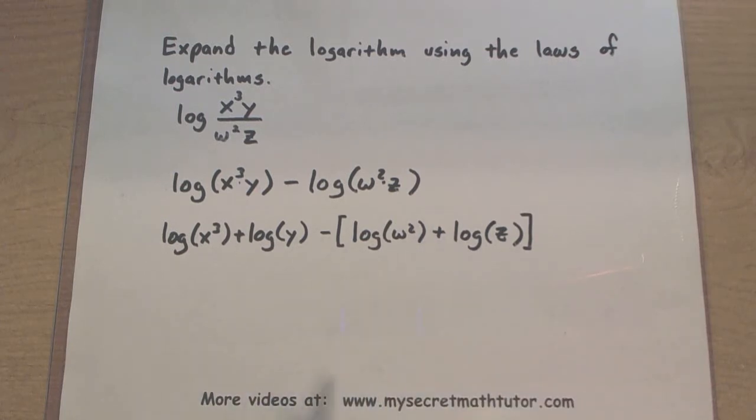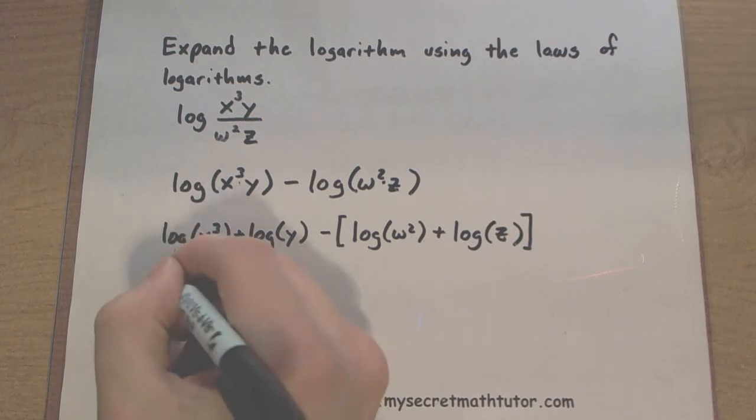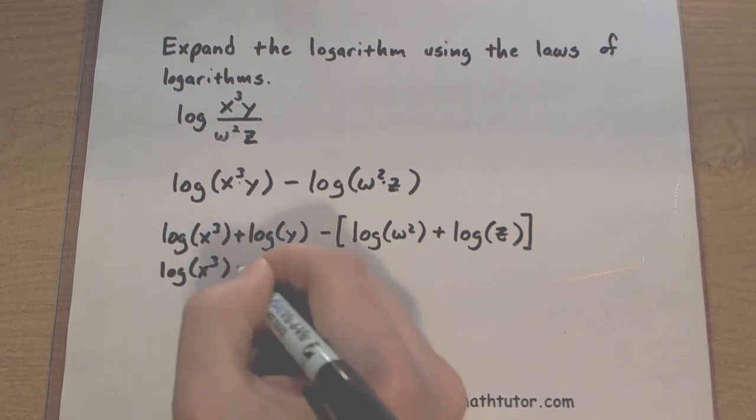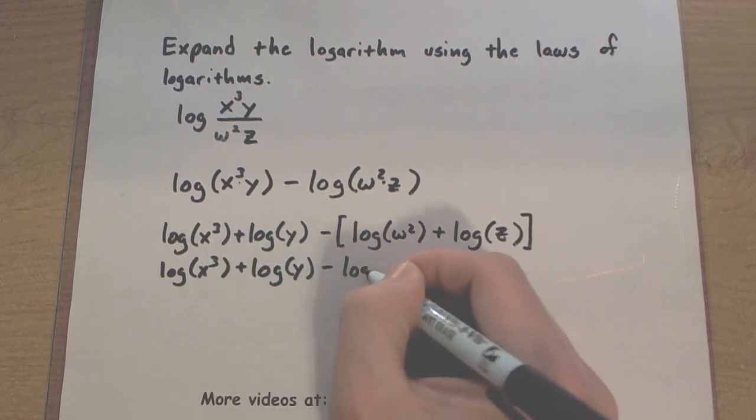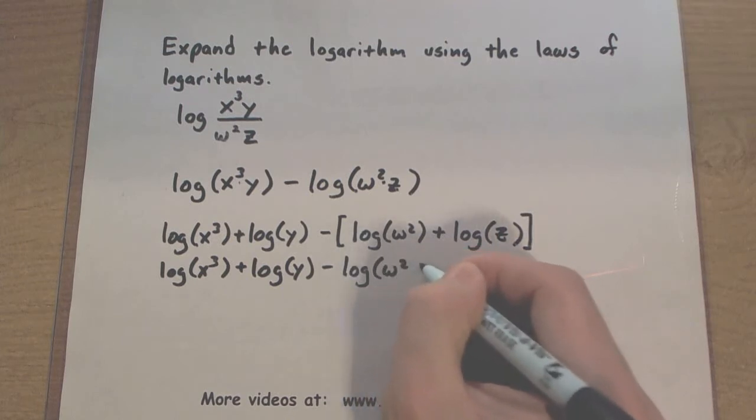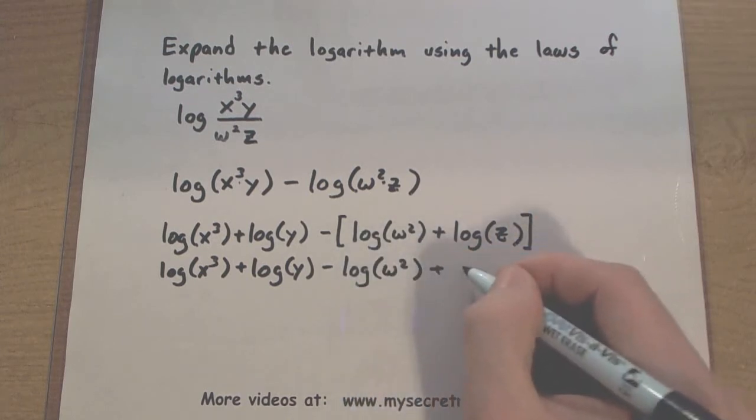It means I'll probably have to distribute that negative sign in just a bit. Now there's one last rule that we can apply to all of these. And it has to do with those powers inside some of the logs.